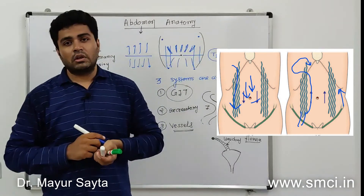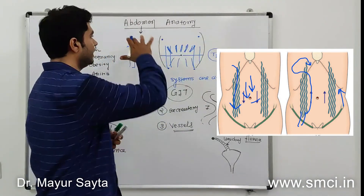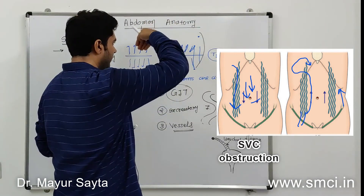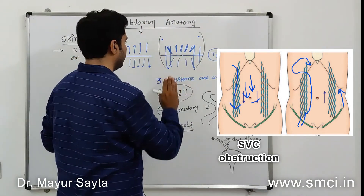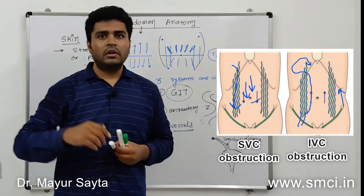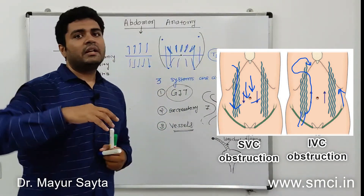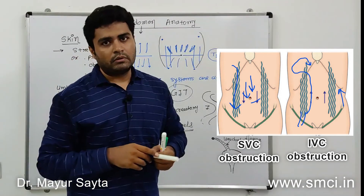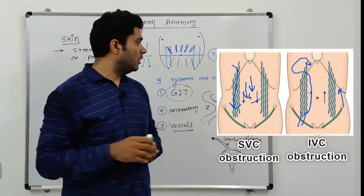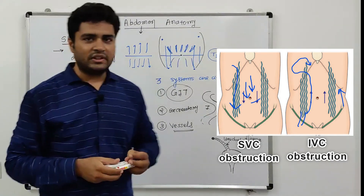If superior vena cava obstruction is present, blood flows from below upward through collateral vessels into the inferior vena cava. If inferior vena cava obstruction is present, blood flows from upward downward. That is all about the umbilicus in today's lecture. Thanks for listening.